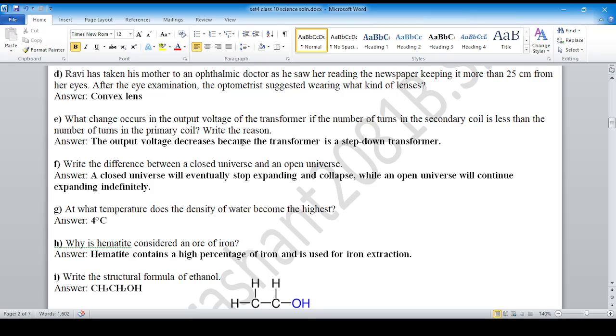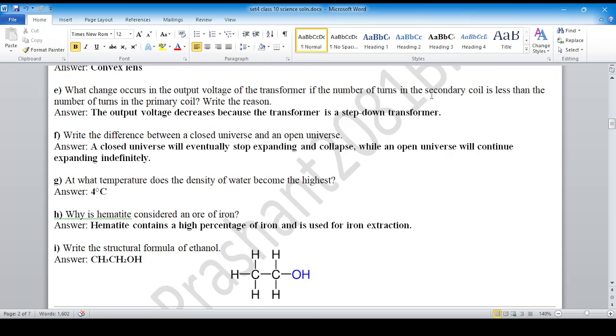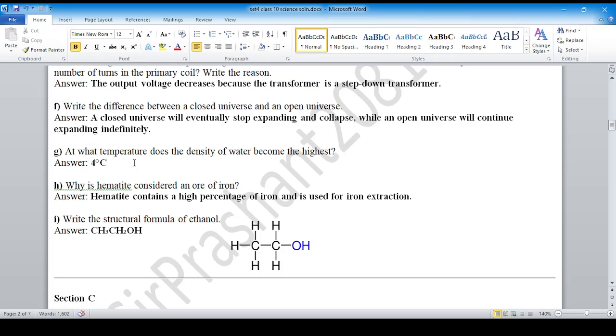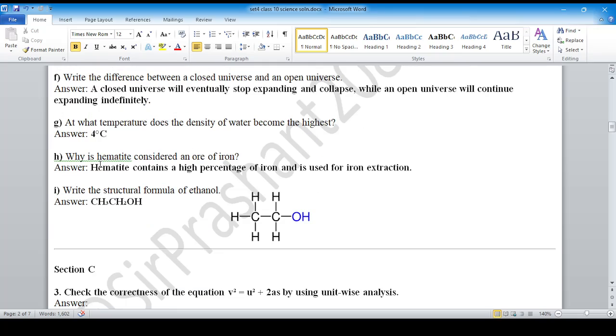The output voltage decreases because the transformer is a step-down, with fewer turns in the secondary coil. Write the difference between closed universe and open universe in one sentence each. At 4 degrees Celsius, density is highest. Hematite is considered an ore of iron because it contains a high percentage of iron. Fe2O3 is its molecular formula.